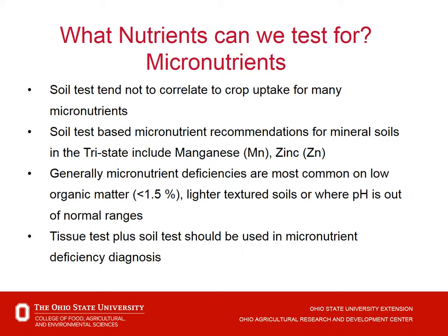For other micronutrient deficiencies we might see them and then perhaps do a little discussion about diagnosis. But typically we're going to see micronutrient deficiencies most commonly in our low organic matter soils — perhaps those less than one to one and a half percent organic matter content. Those lighter texture soils, or where pH is out of the normal ranges, is where we might see some micronutrient deficiencies. For diagnosis, we'd like to do a tissue test plus a soil test, testing the affected area and the nearby unaffected area for comparison.